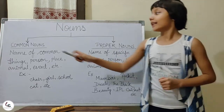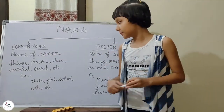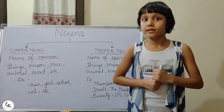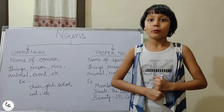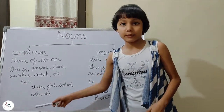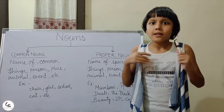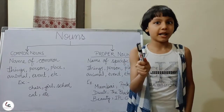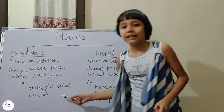Common Nouns: Chair — we don't know which chair it is. Girl, School — we don't know which school it is. Cat — we don't know which cat we are talking about. So these all are common nouns. But remember these all are names.